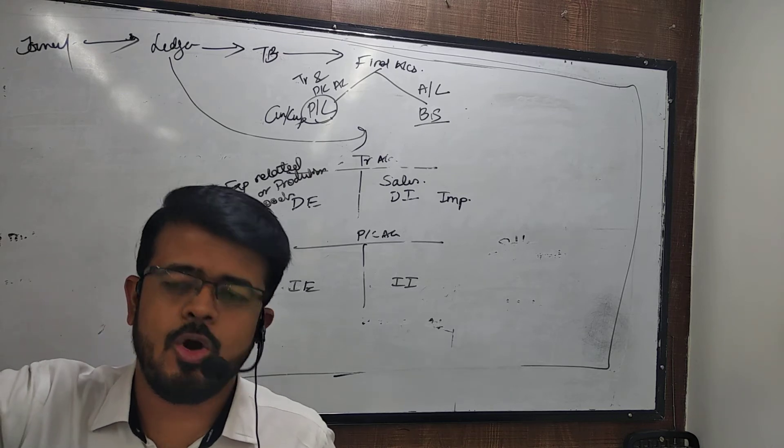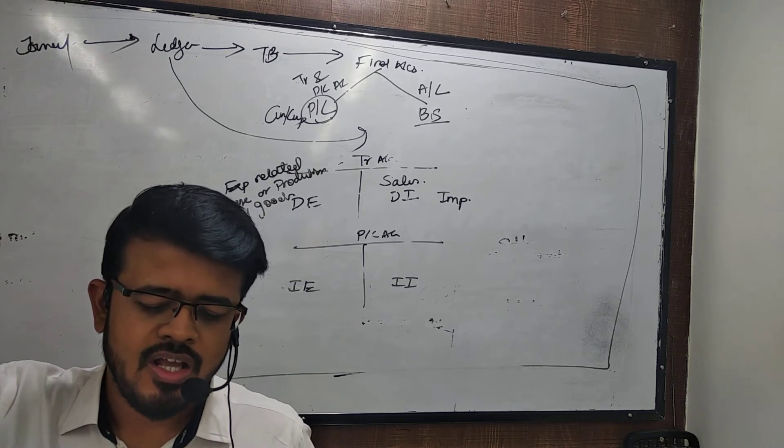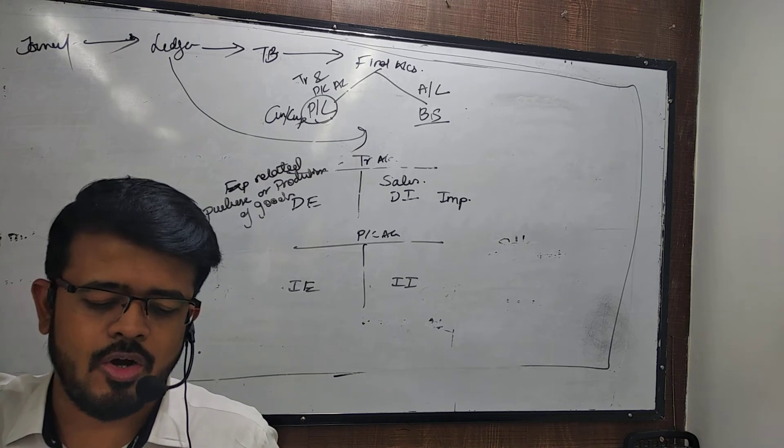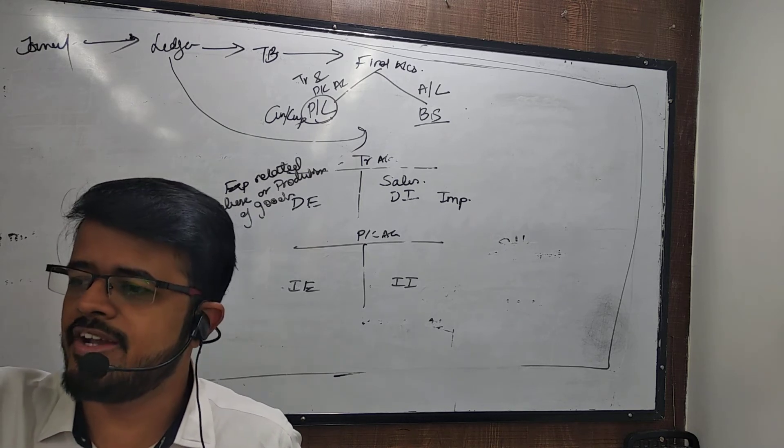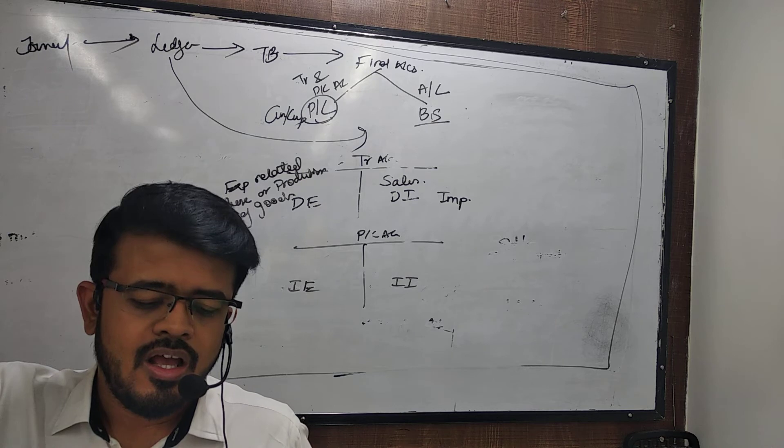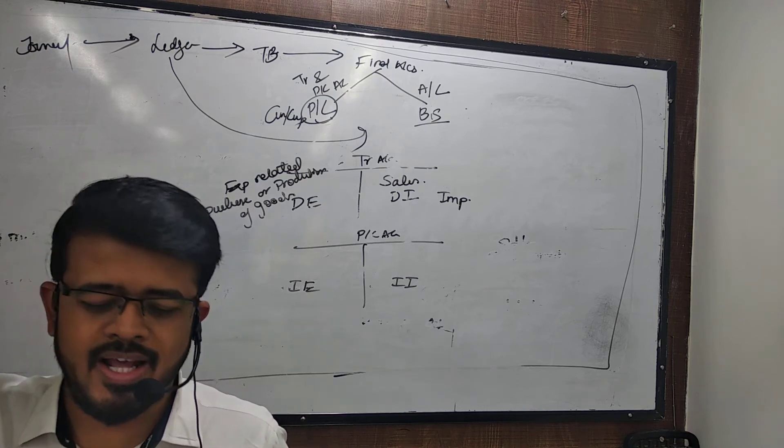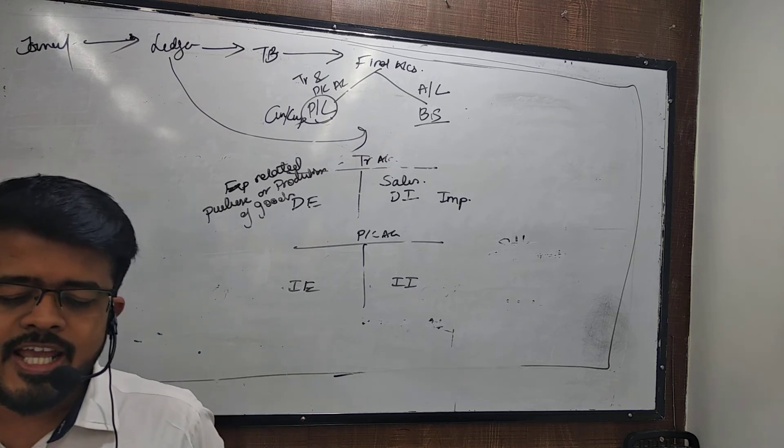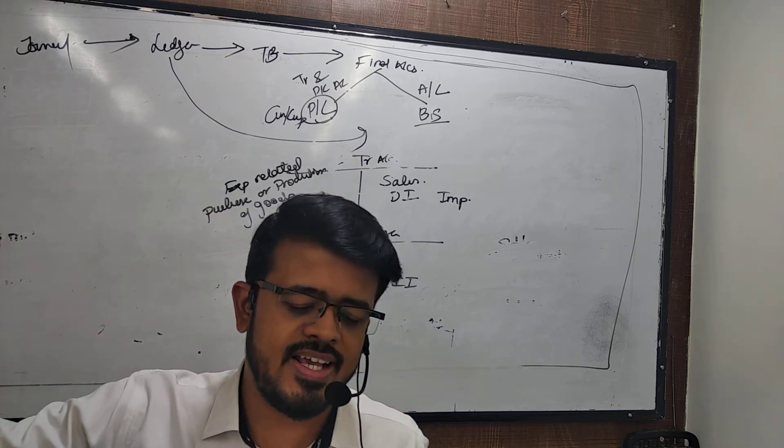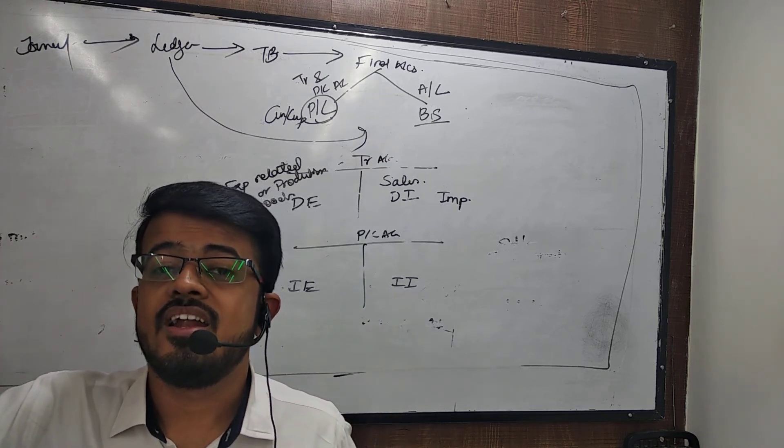Direct expenses are all those expenses which are incurred either in factory or purchase or manufacture. Relate karne ko aara expense ko dekhiye. Khareetne pe, manane pe ho rae to idar. If only carriage, freight or ointy is given, it is assumed to be direct, direct.